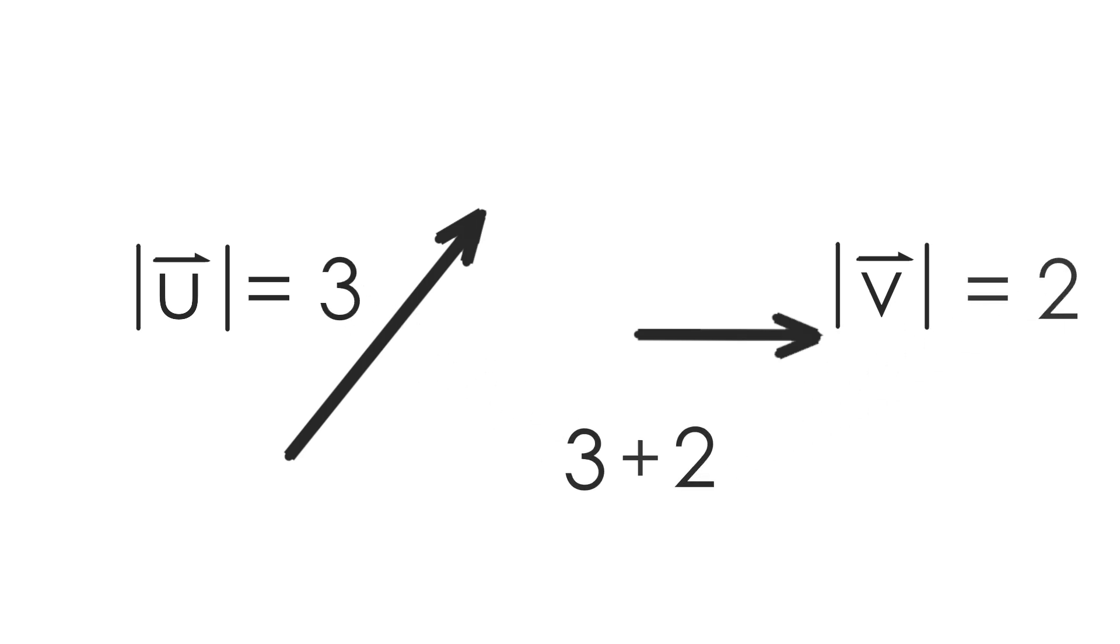Conventionally adding 3 plus 2 would give us the distance along the path formed by these two vectors, but distance is not a vector quantity, so we need another method.